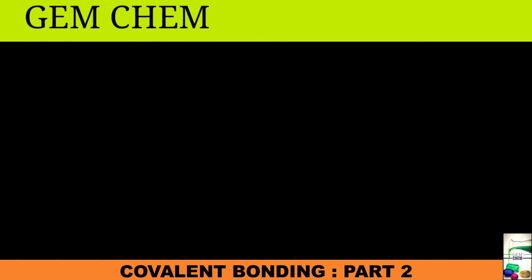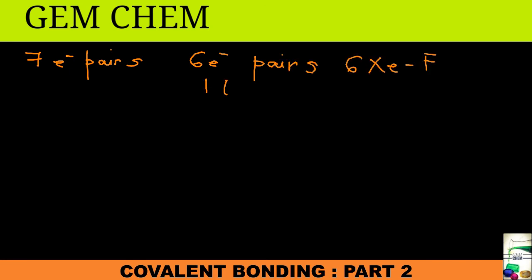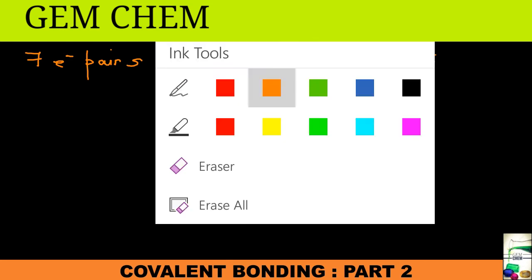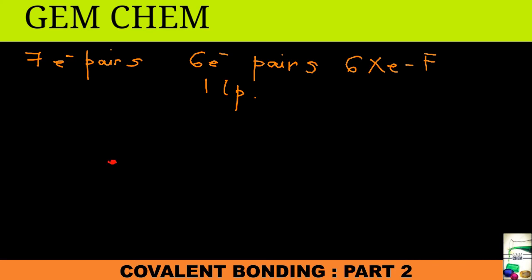VSEPR theory cannot fully explain XeF₆'s actual distorted octahedral structure. The six Xe-F bonds account for 12 electrons, so there must be one lone pair remaining. This lone pair must either extend through a face of the octahedron or through an edge. The structure consists of four fluorine atoms in a plane with the xenon atom, one fluorine above and one below the plane, forming an octahedron.